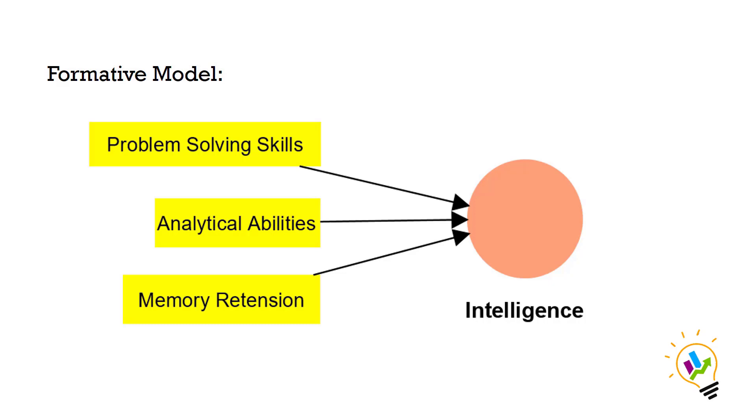For example, let's consider the construct intelligence. We want to measure intelligence using three observable variables: problem-solving skills, analytical abilities, and memory retention. In this case, we assume that these observed variables together form the construct of intelligence. Each of these variables contributes uniquely to the overall intelligence of a person. So the construct intelligence is not causing the observed variables, but rather being created by them.